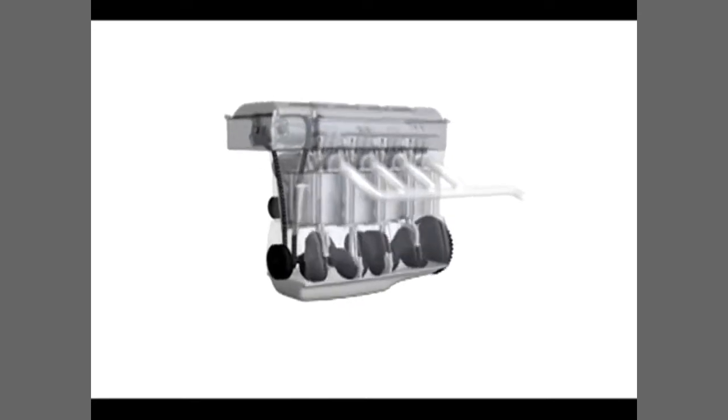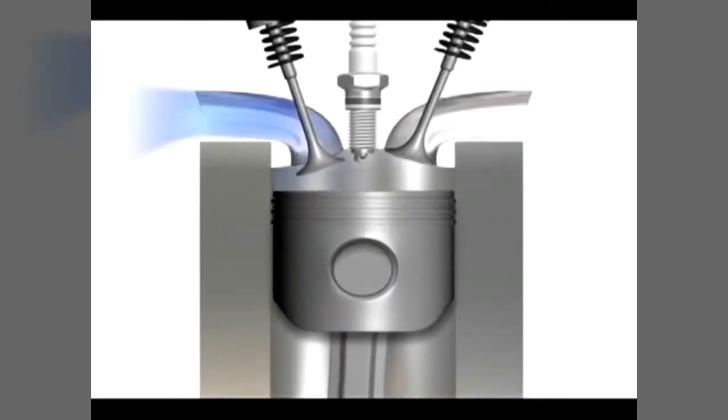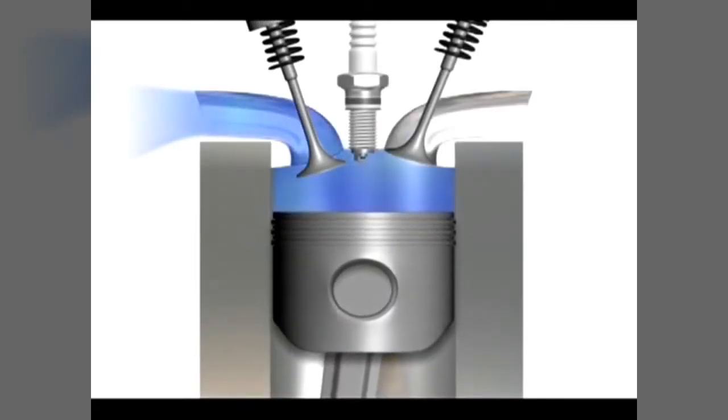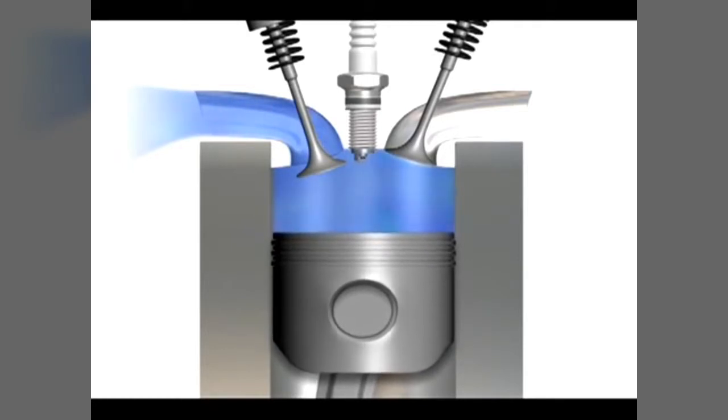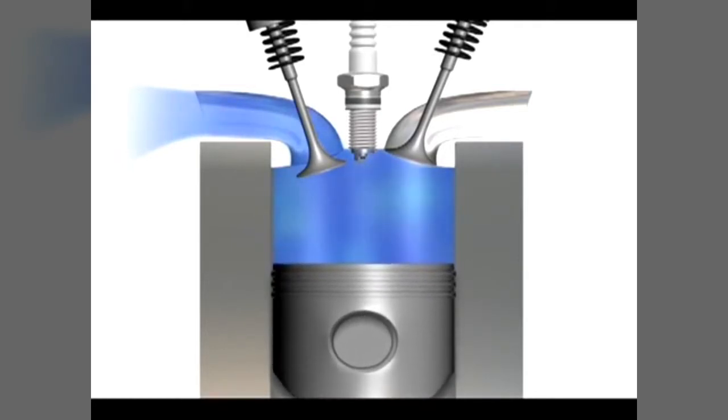Power is produced in the engine by the four-stroke process. As the piston moves on its first downward stroke, the intake valve opens to allow a mixture of air and fuel to fill the combustion chamber. This is called the intake stroke.